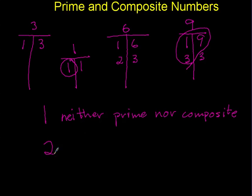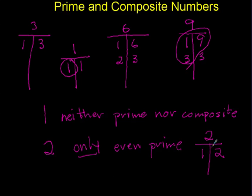2 is also unique. It's the only even prime number. Every other even number is composite. So if we put 2 on our factor T, we've got 1 and 2, only 2 factors. So it's prime.